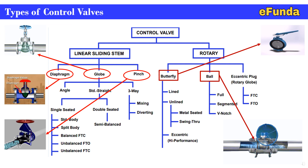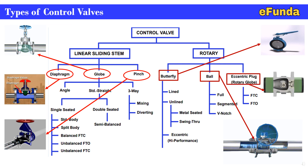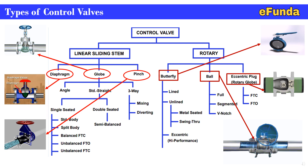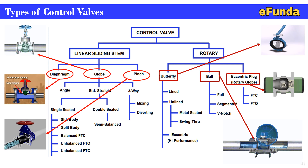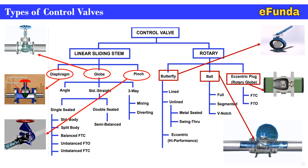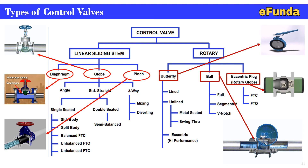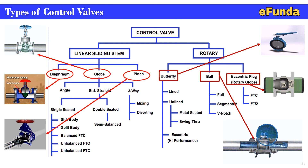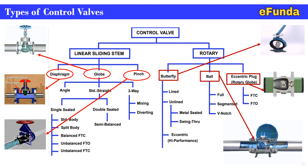This gives either full bore or nearly full bore flow with very little pressure drop. The third rotary type is the eccentric plug rotary globe type, which shows a typical eccentric plug. These valves are normally installed with the plug spindle horizontal, as shown, with the actuator attached along the valve.